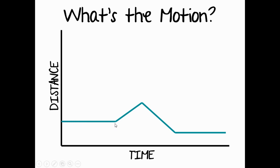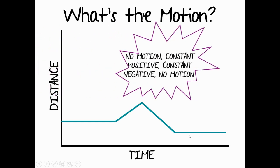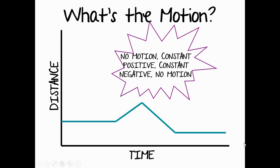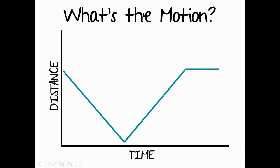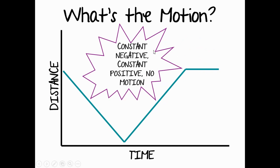This is a flat line, meaning no motion. From here to here it's moving up the y-axis in a straight line, so constant positive. This line segment is moving down the y-axis in a straight line, meaning constant negative. And this is a flat line, meaning no motion. So: constant negative, then constant positive, and then no motion.